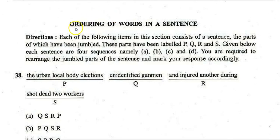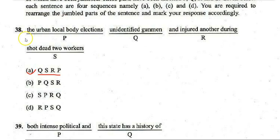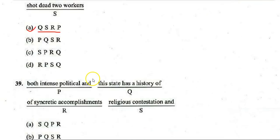Next section: Ordering of Words in a Sentence. First question parts: 'the urban local body elections,' 'unidentified gunmen,' 'and injured another during,' 'shot dead two workers.' The correct sequence is Q, S, R, P — forming: 'Unidentified gunmen shot dead two workers and injured another during the urban local body elections.'